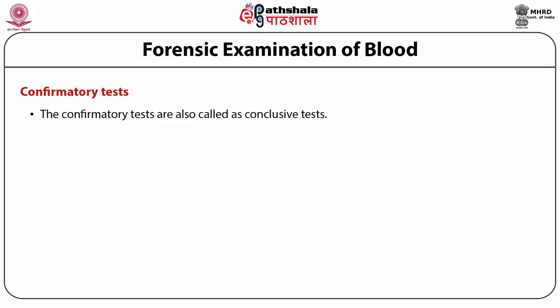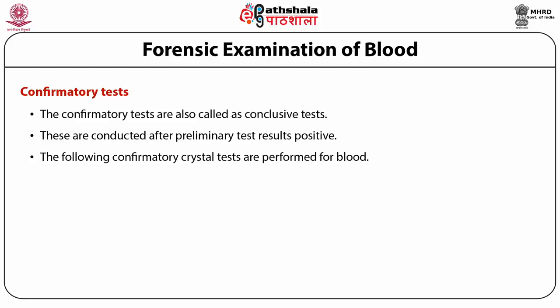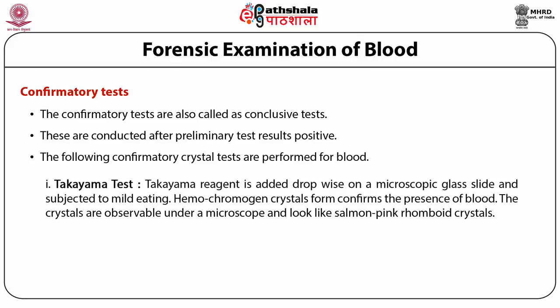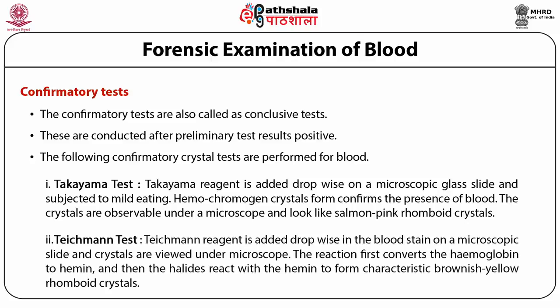Confirmatory tests, also called conclusive tests, are conducted after preliminary tests return positive. The first is the Takayama test: Takayama reagent is added drop-wise on a microscopic slide and subjected to mild heating. Hemochromogen crystals form to confirm the presence of blood; these crystals are observable under a microscope and look like salmon-pink rhomboid crystals. The second is the Teichmann test: Takayama reagent is added drop-wise to the blood stain on a microscopic slide. The reaction first converts hemoglobin to hemin, and the halides react with hemin to form characteristic brownish-yellow rhomboid crystals.